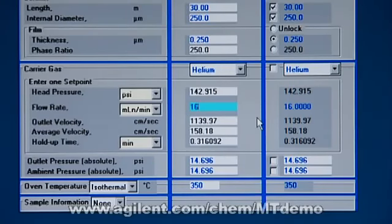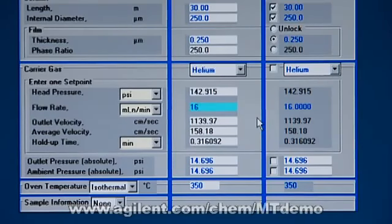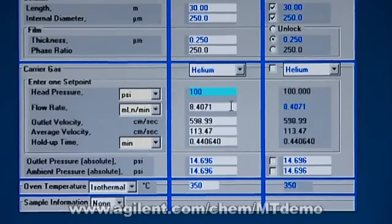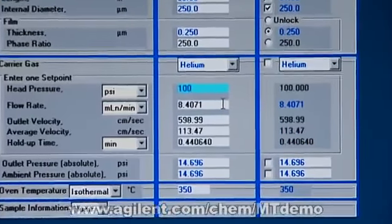You're not supposed to go higher than that. We do have a specialized EPC that goes up to 150, but if I have 100 psi inlet, I'm too high of a pressure. So I see that the maximum flow rate... Let's try that. Let's put in 100 psi and find out that our maximum flow rate that we're going to be able to use at 350 degrees is going to be 8.4 mils a minute.